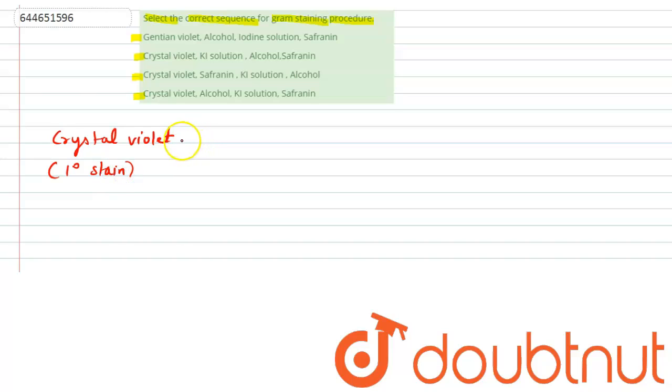It will impart blue color to the smear. After that it is treated with potassium iodide, that is iodine application is done and it will act as a mordant. It will help the smear to retain that particular color.